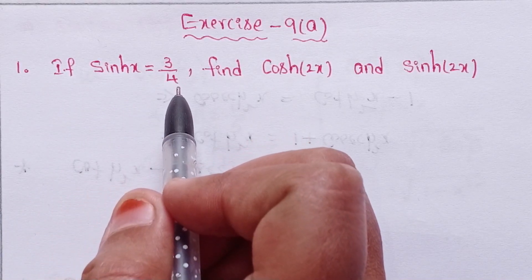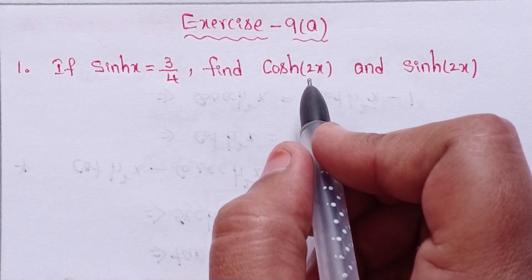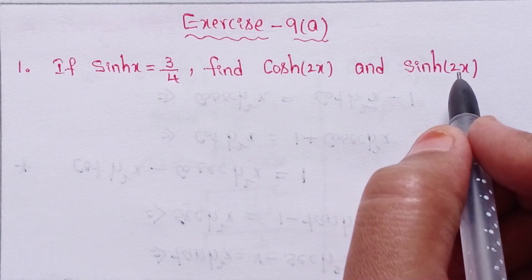If sinh x equals 3 by 4, find cosh of 2x and sinh of 2x.